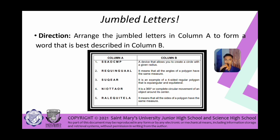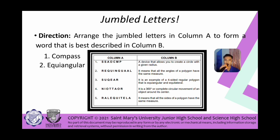For number one, the answer is compass — a device that allows you to create a circle with a given radius. For number two, we have equilangular, meaning all the angles of a polygon have the same measure. And number three, we have square — an example of a four-sided or regular polygon that is both equilangular and equilateral.